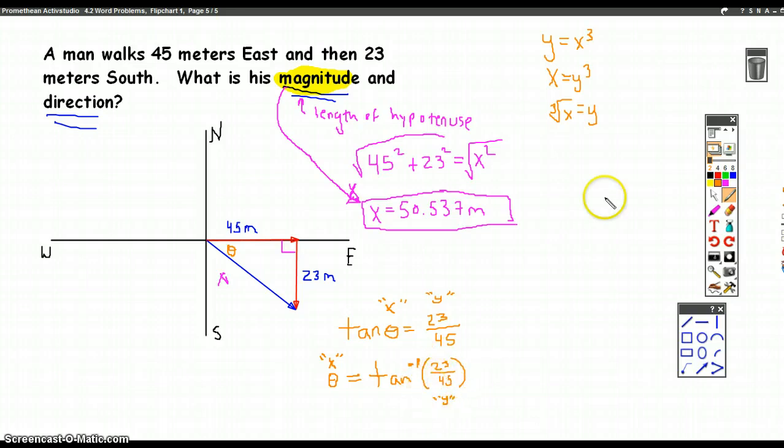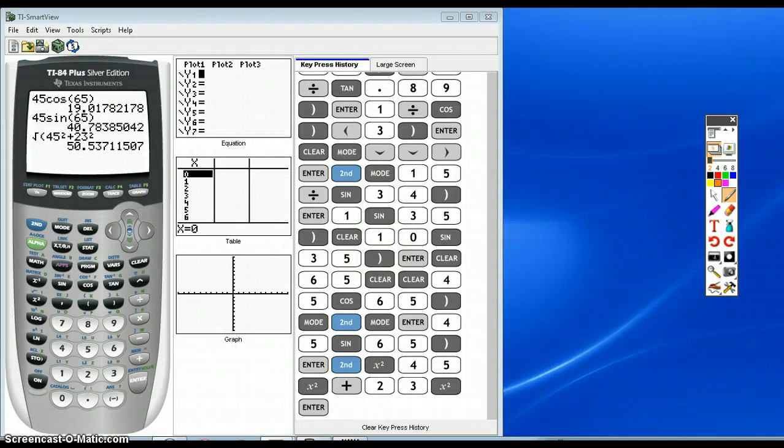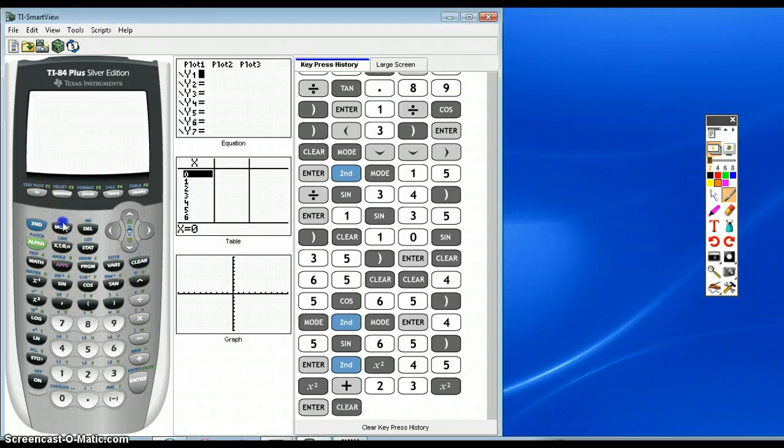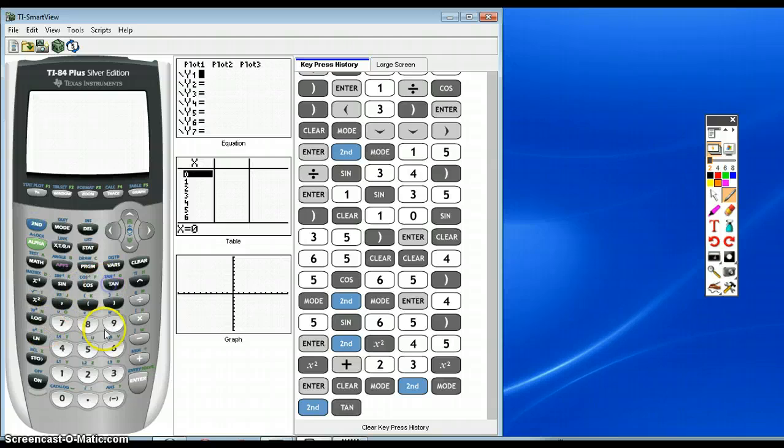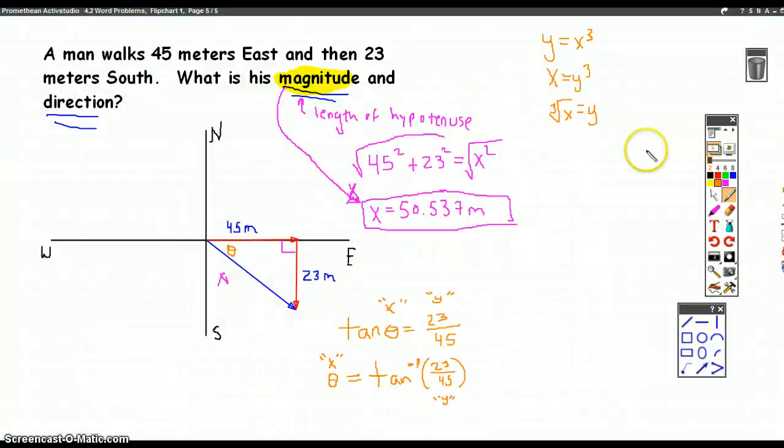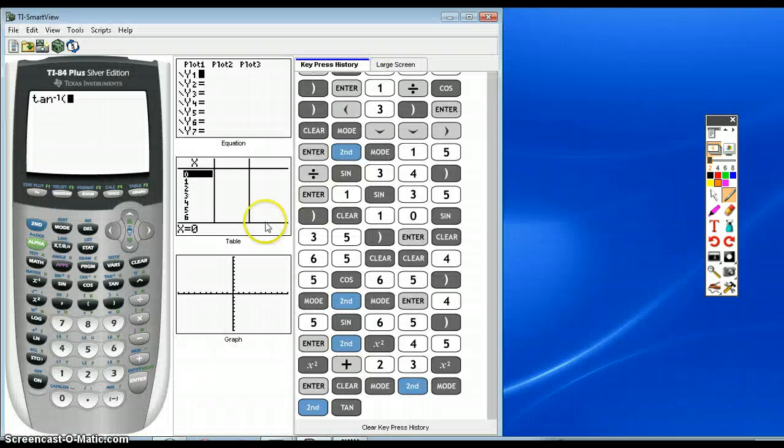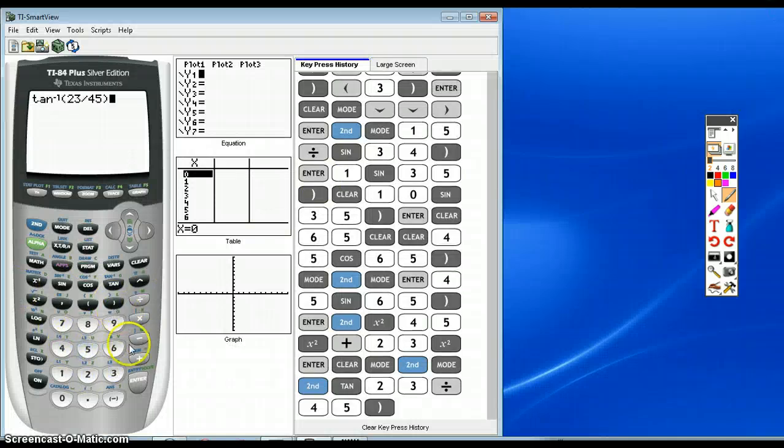Which we can go do on our calculator. We just got to make sure we're in degrees, and we'll get our answer right away. So, pretty sure I'm in degrees. I do tan inverse of, is it 23 divided by 45? Yes, 23 divided by 45. You get your angle, 27.072.